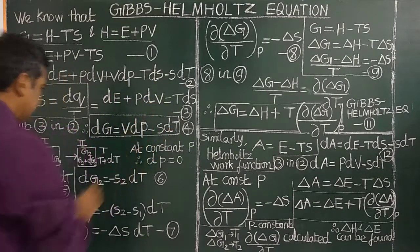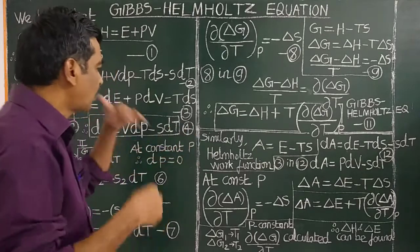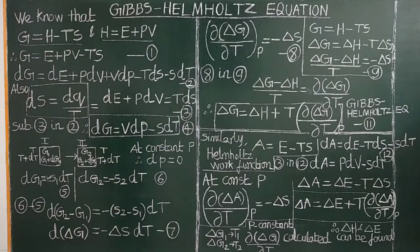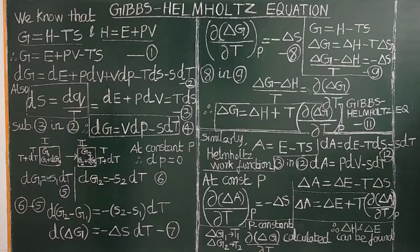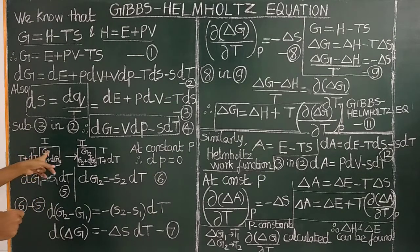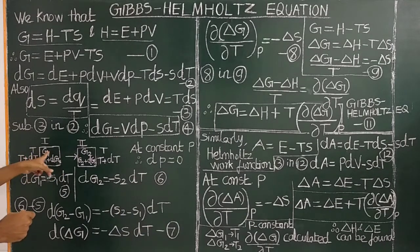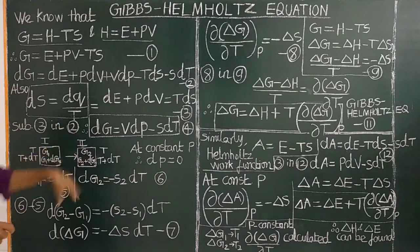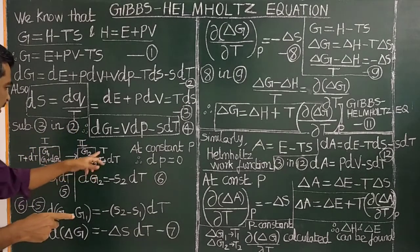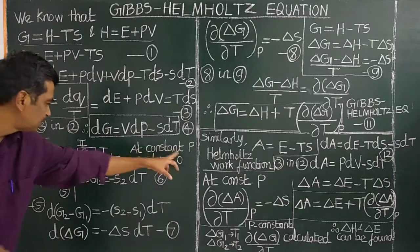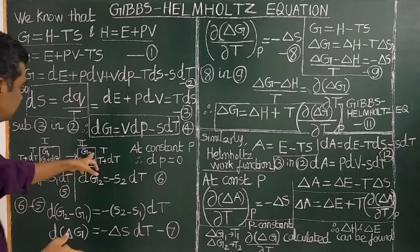This expression is very useful for obtaining thermodynamic relationships. Now let us consider a thermodynamic system whose free energy is G1 at temperature T. This is the initial state and it goes from initial state to final state at the same temperature and at constant pressure.